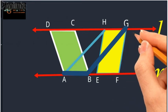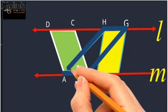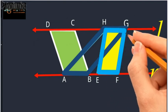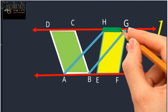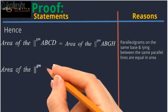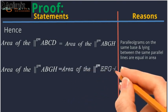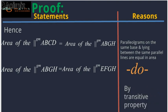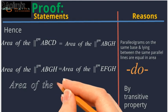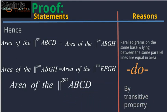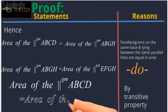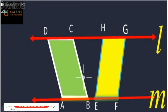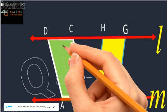Now, the area of parallelogram ABGH is equal to the area of parallelogram EFGH, as they have the same base HG. Thus, by the transitive property, the area of parallelogram ABCD is equal to the area of parallelogram EFGH. And this is what we wanted to prove. Hence, the theorem is proved.